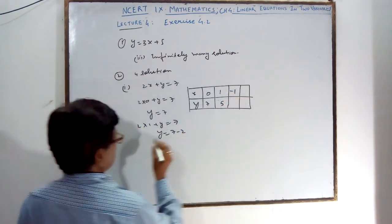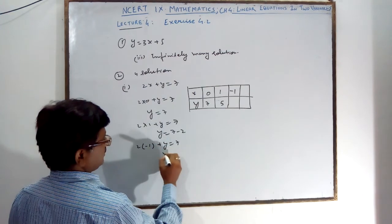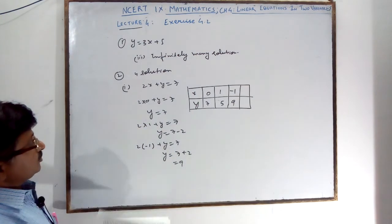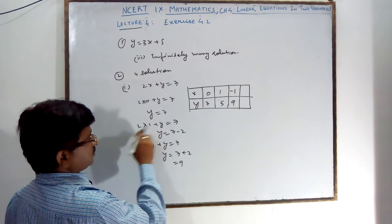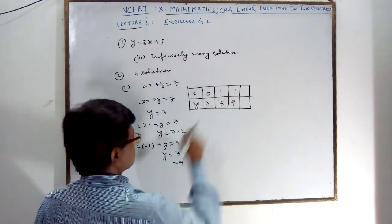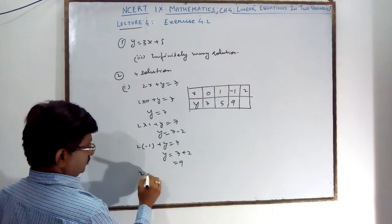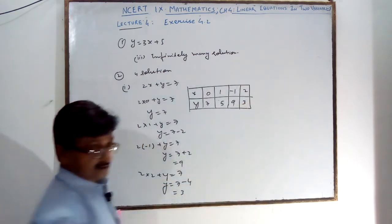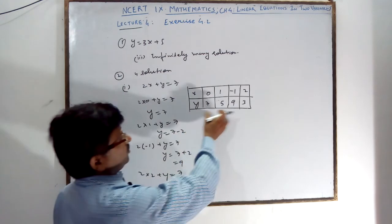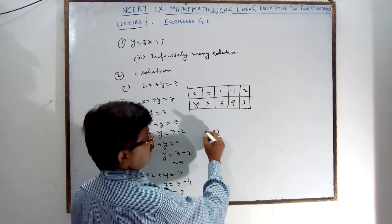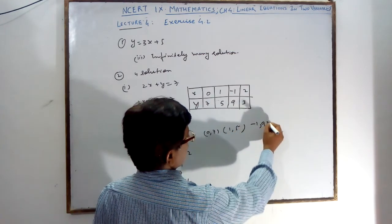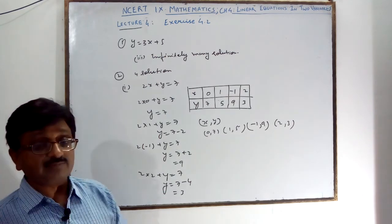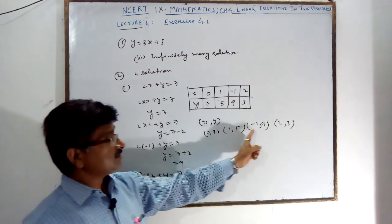When x = -1: 2(-1) + y = 7, then y = 7 + 2 = 9. When x = 2: 2(2) + y = 7, then y = 7 - 4 = 3. So you are getting 4 solutions. You can write them as coordinate points: (0, 7), (1, 5), (-1, 9), and (2, 3) — these are the 4 solutions in the Cartesian plane.